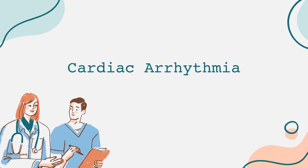To understand arrhythmias, we first look at the heart's anatomy. The heart has four chambers: two atria and two ventricles. The electrical system consists mainly of the sinoatrial node, atrioventricular node, and the bundle of His. The sinoatrial node, located in the right atrium, acts as the natural pacemaker, controlling heart rate by generating electrical impulses that spread through the heart, stimulating contractions and maintaining a regular rhythm.